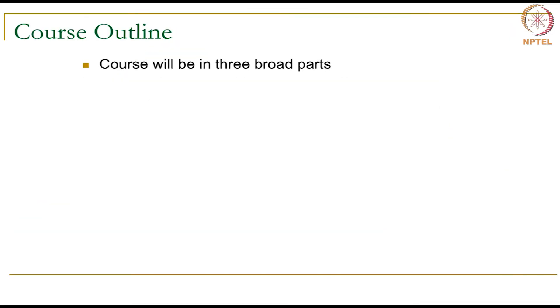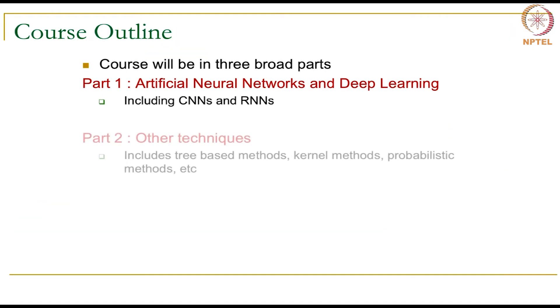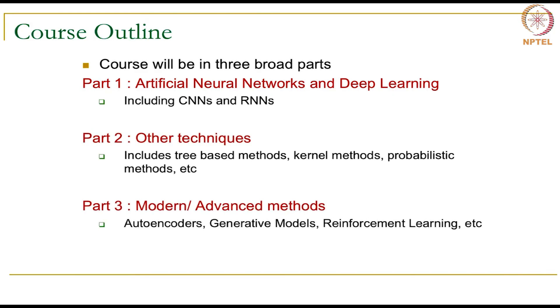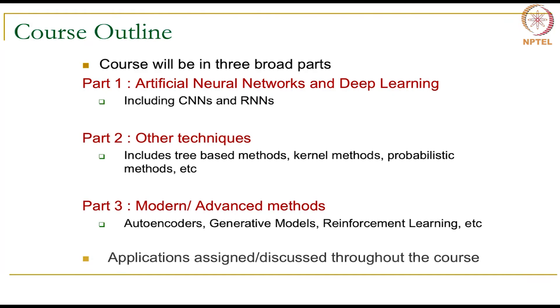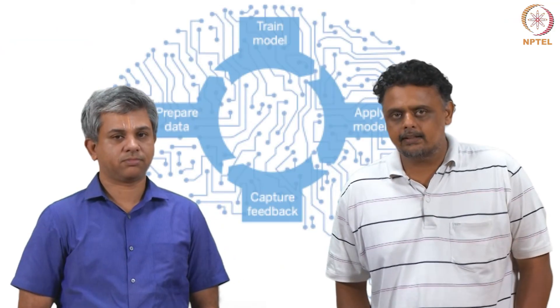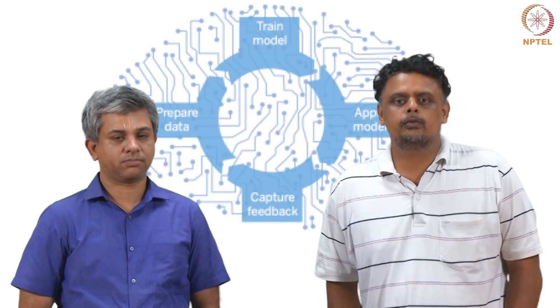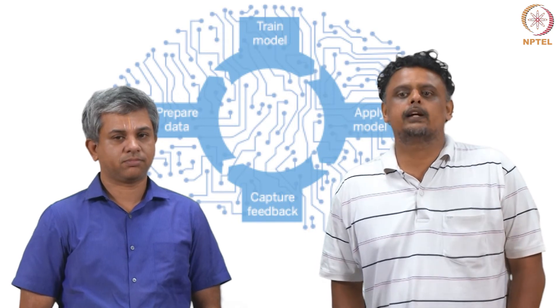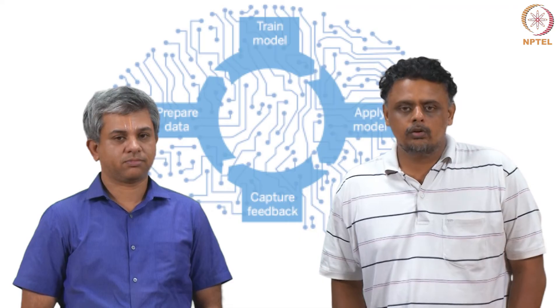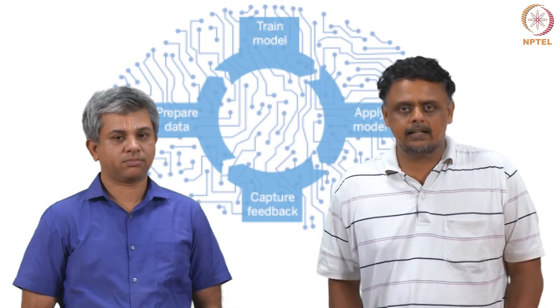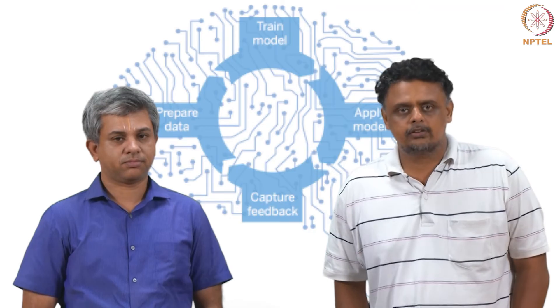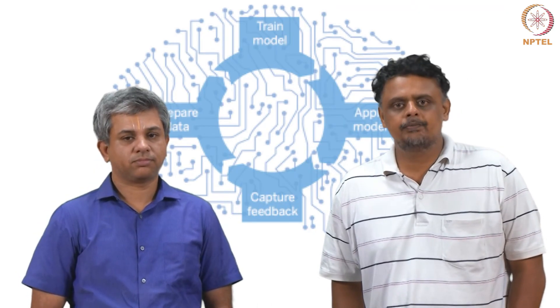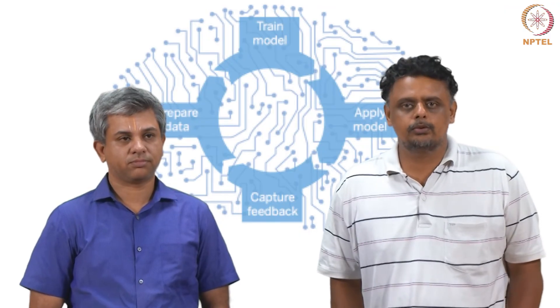The course consists of three broad parts. Part one will be focused on artificial neural networks and deep learning, which will include CNNs and RNNs or recurrent neural networks. We will also cover other classical techniques like binary decision trees, random forest, and probabilistic techniques. We will conclude the course with a look at recent advances in deep learning, which includes variational autoencoders, autoencoders in general, generative models including Generative Adversarial Networks, as well as a small introduction to reinforcement learning.